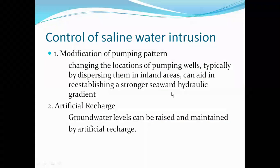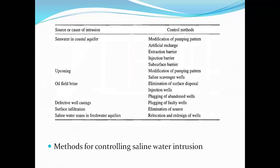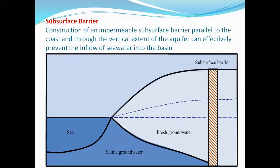For seawater in coastal aquifers, the control methods include modification of pumping pattern and artificial recharge. For oil field brine, methods include scavenger wells and elimination of surface disposal. For defective wells, the approach involves plugging of faulty wells, repairing defective casings, and surface infiltration. For saline water zones in fresh water aquifers, the method involves elimination of the source and relocating or redesigning wells.